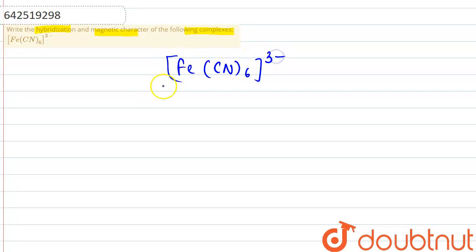First of all, we would be finding the oxidation state of iron here. Let's say it is X. We know that cyanide ligand contains a charge of minus 1, so 6 cyanide ligands give 6 into minus 1. Overall charge on the complex is minus 3.